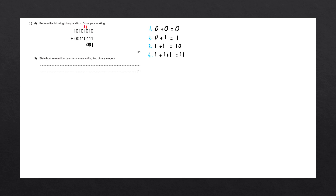Again, we have 1 plus 1 plus 0, which can be simplified to 1 plus 1. Let's write down the 0 and carry over the 1. Again, 1 plus 0 plus 1 — that is our third rule. Write down the 0, carry over the 1.